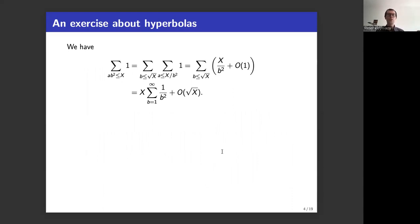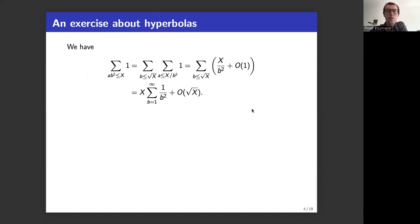Let's count the sum over a·b² ≤ x. This is not too difficult. If a·b² ≤ x, that means b has to be at most √x, and a can go up to x/b². Evaluating the sum gives x/b² + O(1) for each b. Adding them all up gives x plus a good error term.